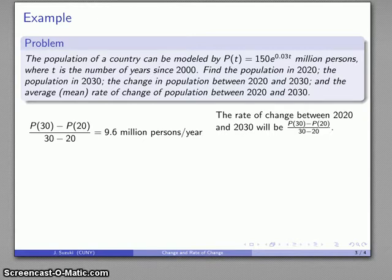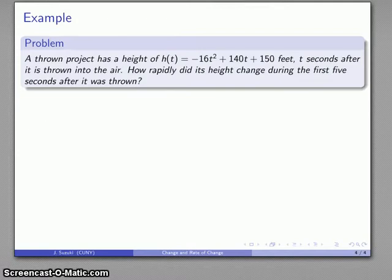Now if the world were a kind and gentle place and perfectly accommodating, any time we needed to find an average rate of change, the world would ask us to find the average rate of change. However, the world is not always so accommodating. In many circumstances we need an average rate of change, but we're not asked to find it explicitly, but rather something equivalent to it. For example, consider this problem.